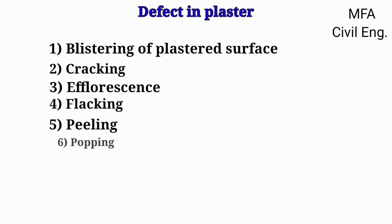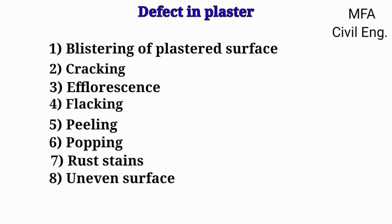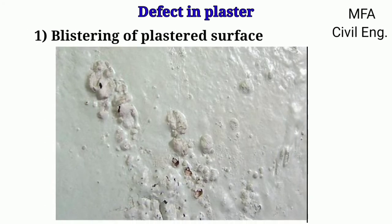Blistering of a plaster surface is the formation of small patches of plaster swelling out beyond the plaster surface, due to the late slaking of lime particles in the plaster.